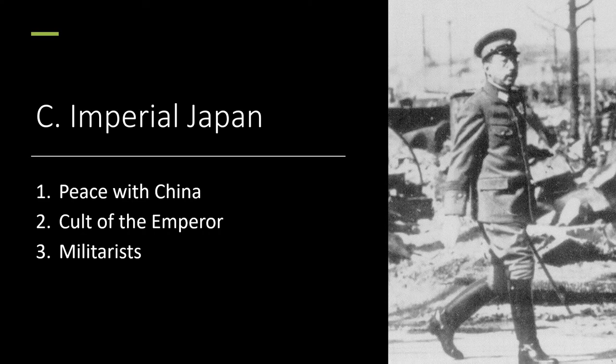Imperial Japan. The Emperor pictured is Hirohito. A 1922 peace treaty with China had respected the territorial integrity of China, but the cult of the Emperor emerged. Strict limits were placed on the Prime Minister and his cabinet. The army answered only to the Emperor and implemented the Bushido Code, the Code of the Samurai. Militarists dreaming of territorial expansion gained control of Japan, driven by the need for raw materials, markets, and space for a growing population.